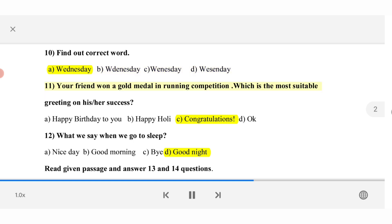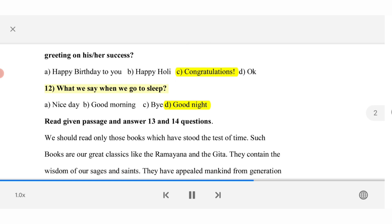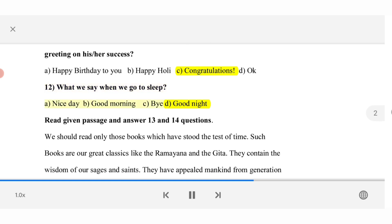11. Your friend won a gold medal in running competition, which is the most suitable greeting on his or her success. A. Happy birthday to you. B. Happy Holi. C. Congratulations. D. OK. 12. What we say when we go to sleep. A. Nice day. B. Good morning. C. Bye. D. Good night.